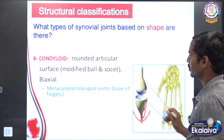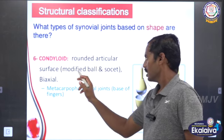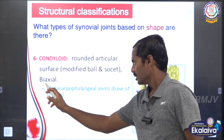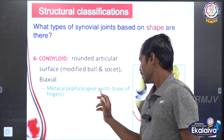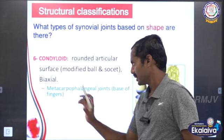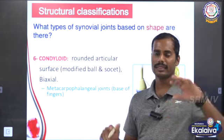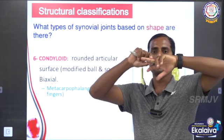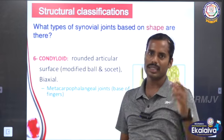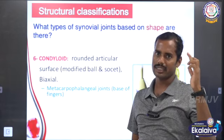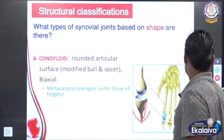The sixth one is condyloid. It has rounded articular surfaces. It is biaxial. Example: the metacarpal-phalangeal joint at the base of the fingers. Movements include flexion, extension, and slight rotation.